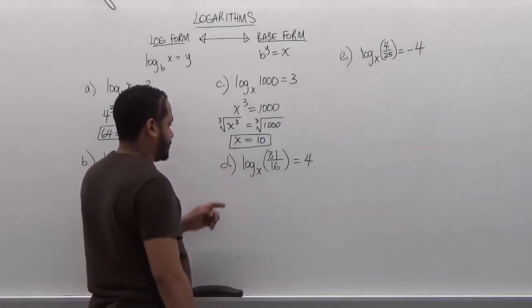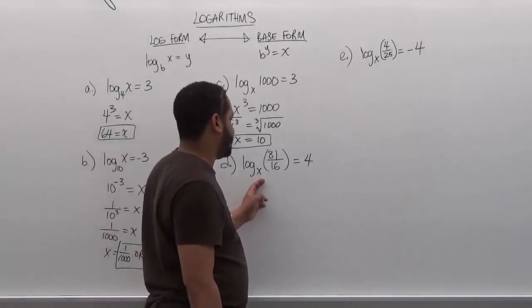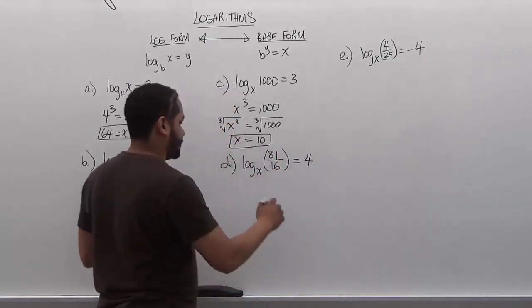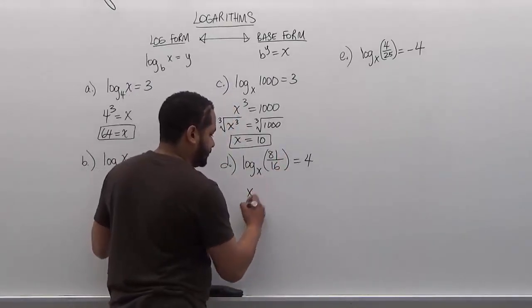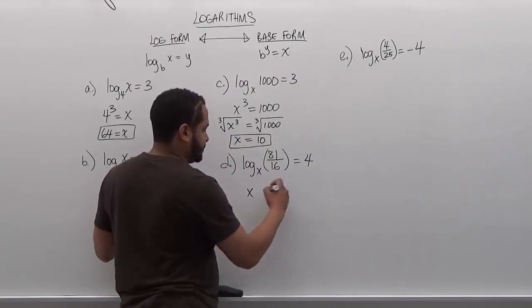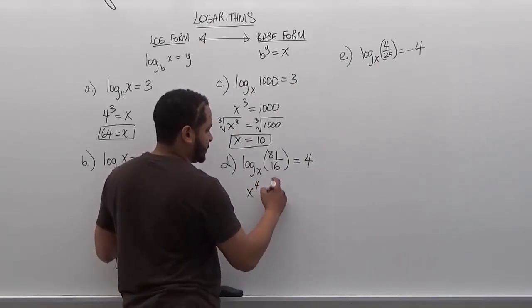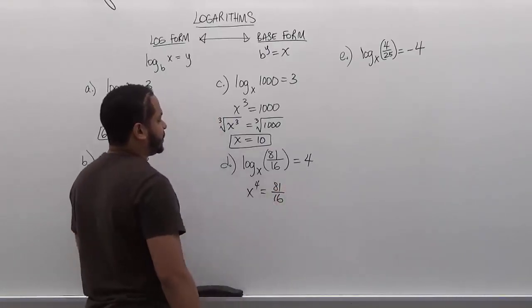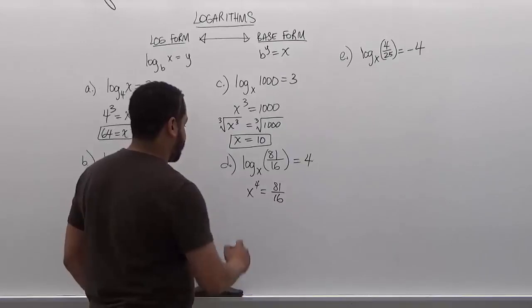Part 4 of this series is going to be log of base x of 81 over 16 is equivalent to 4. So our first step again, take the base, take the solution of the log and make it the exponent, take the term and set it to the solution. Now what we're going to do is take the fourth power root of both sides.